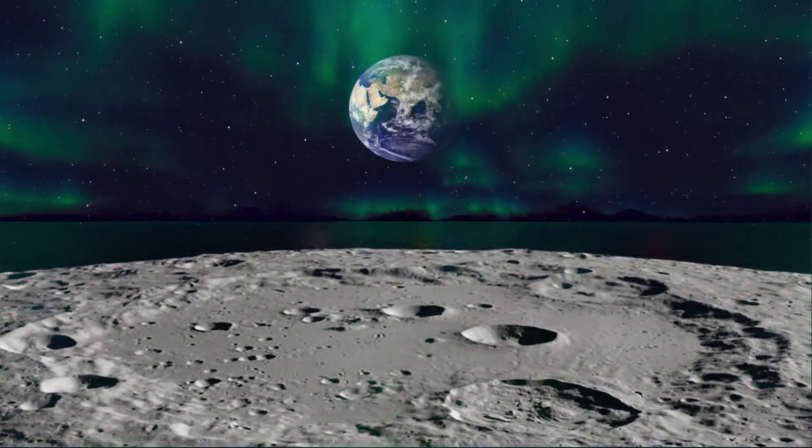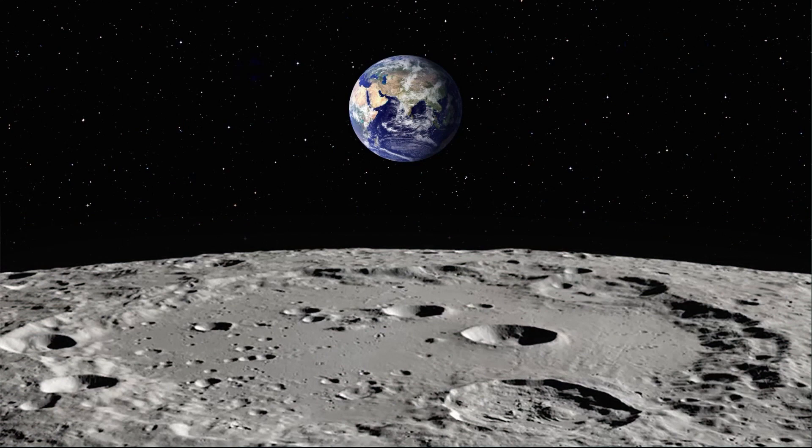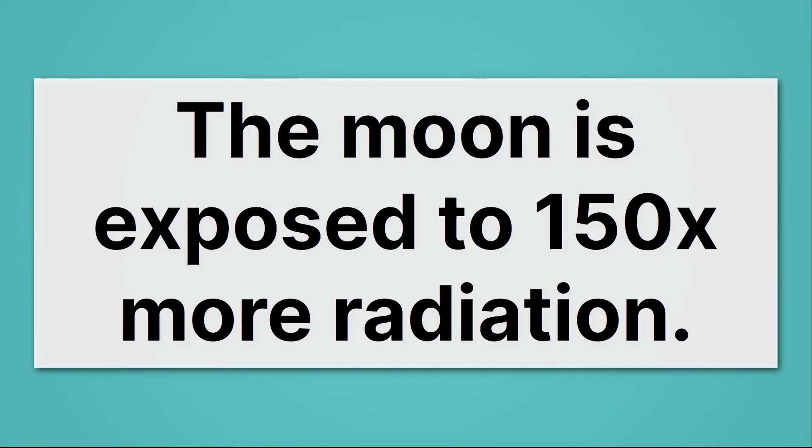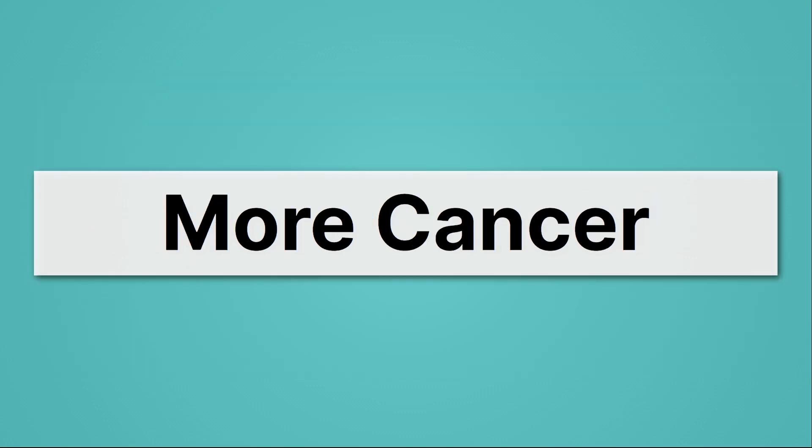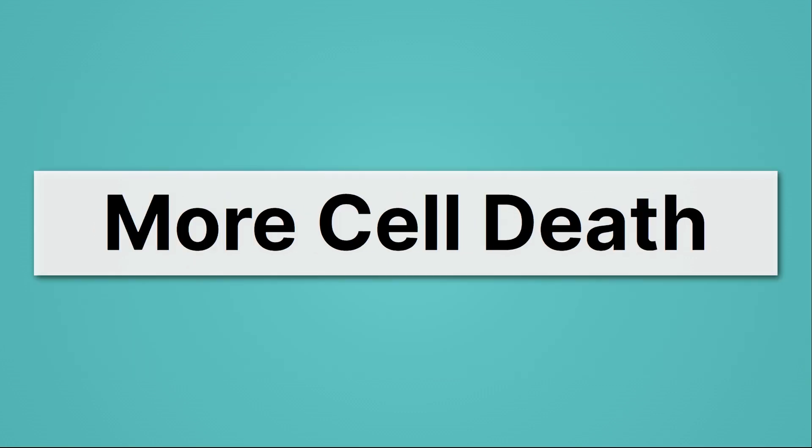Sadly though, not every planet or planetoid has this magnetic shield. The Moon, for example, lacks the magnetic shield. And because of that, the Moon is exposed to 150 times more radiation. That much more radiation would lead to more cancer and more cell death. So radiation is really bad for life.